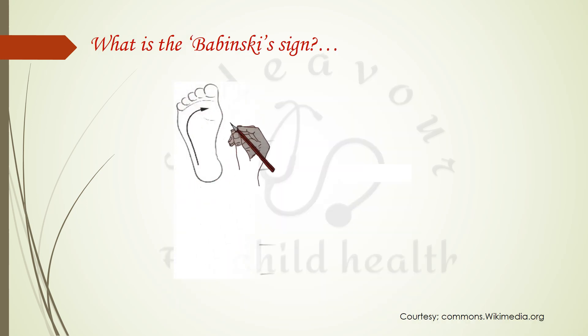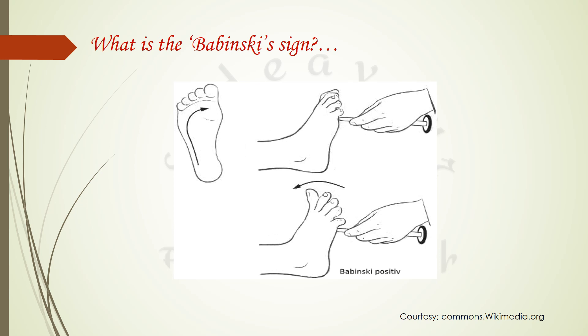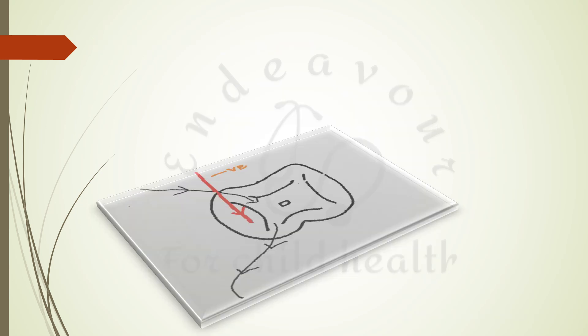For example, in eliciting the plantar reflex, we give a nociceptive stimulus to the lateral border of the foot, which is the S1 dermatome, which normally causes plantar flexion mediated through S1 and the tibial nerve. So basically the plantar reflex is a spinal reflex where the afferent is S1 and the efferent is via S1 and tibial nerve, root value L4, L5, S1, S2, S3.